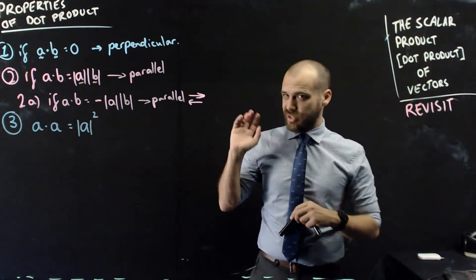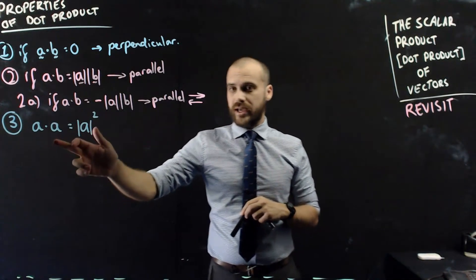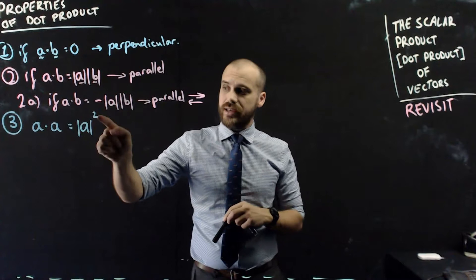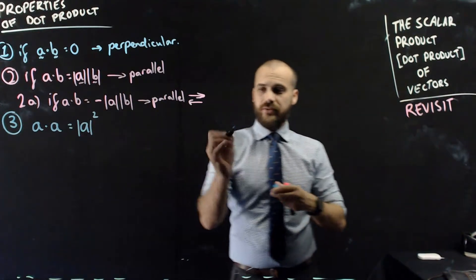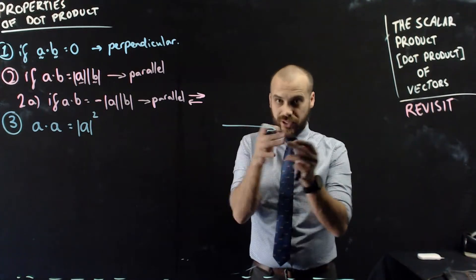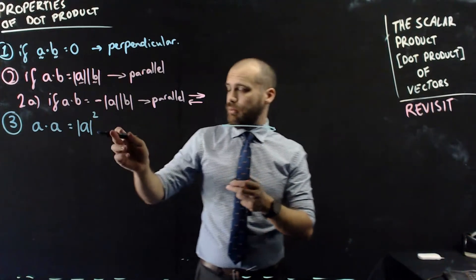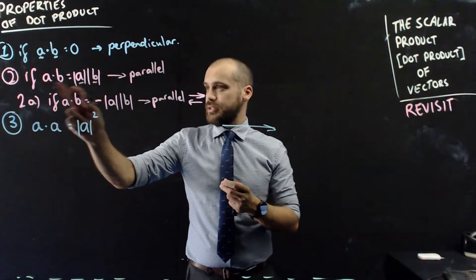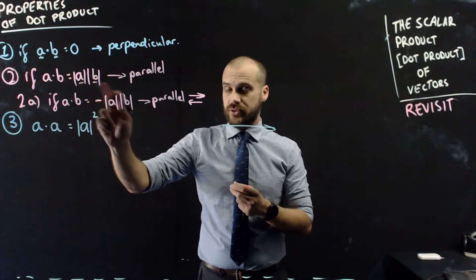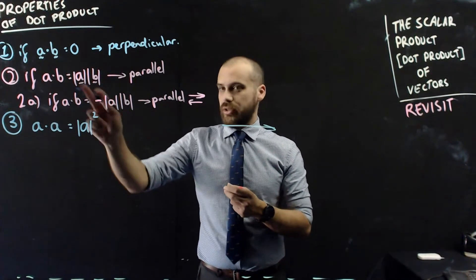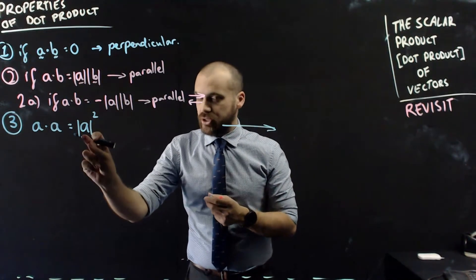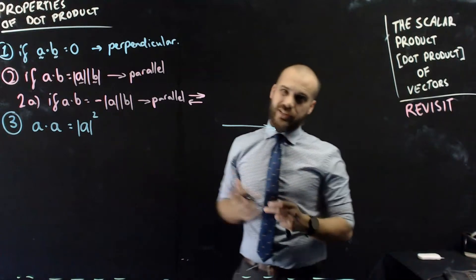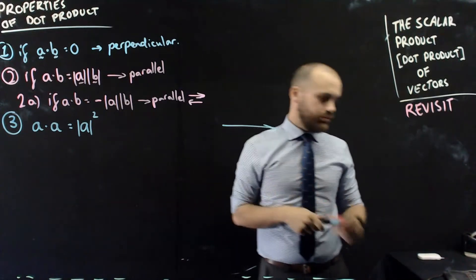We're working in order of importance here. So 3 is a dot a equals the magnitude of a squared. Not hard to see why. The vector a is parallel with itself. And we already know that parallel vectors are just the magnitude of themselves multiplied by each other. So in this case, that's the magnitude of a times the magnitude of a, which is a squared. Neat little thing there.